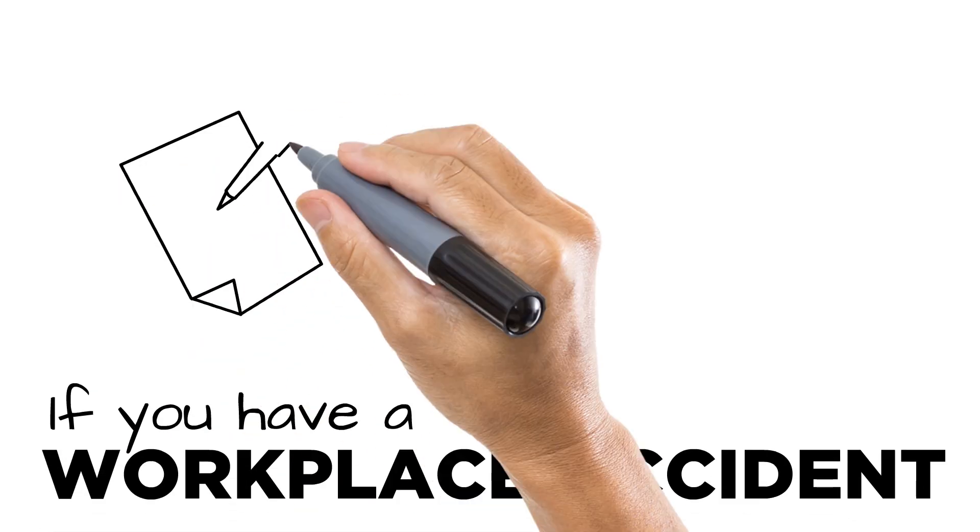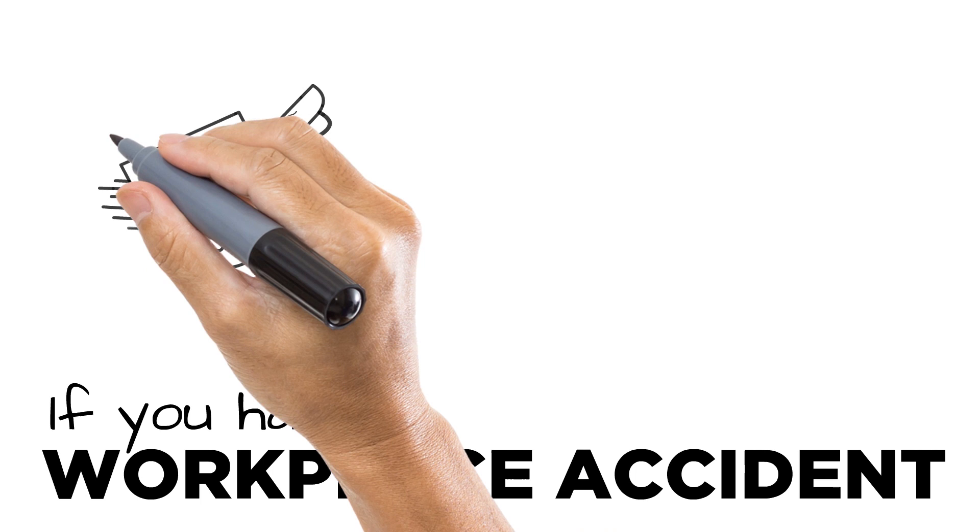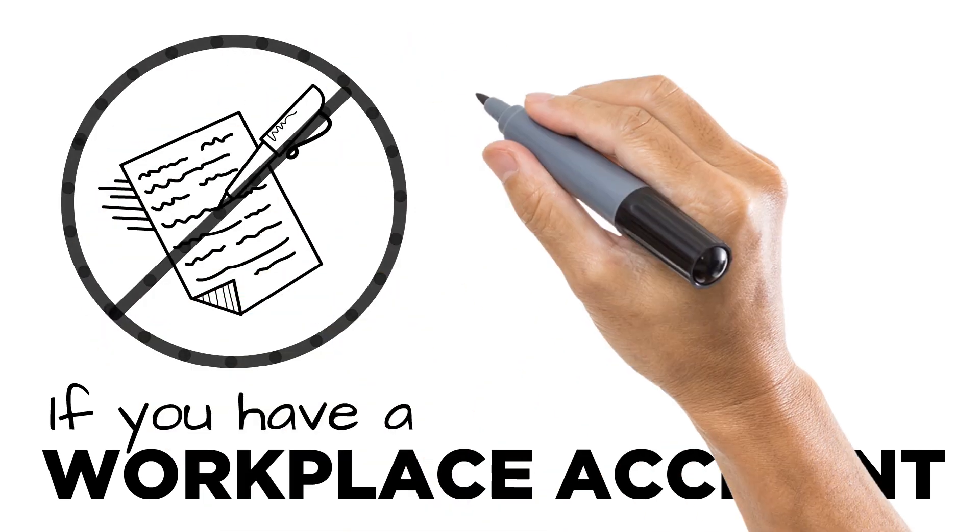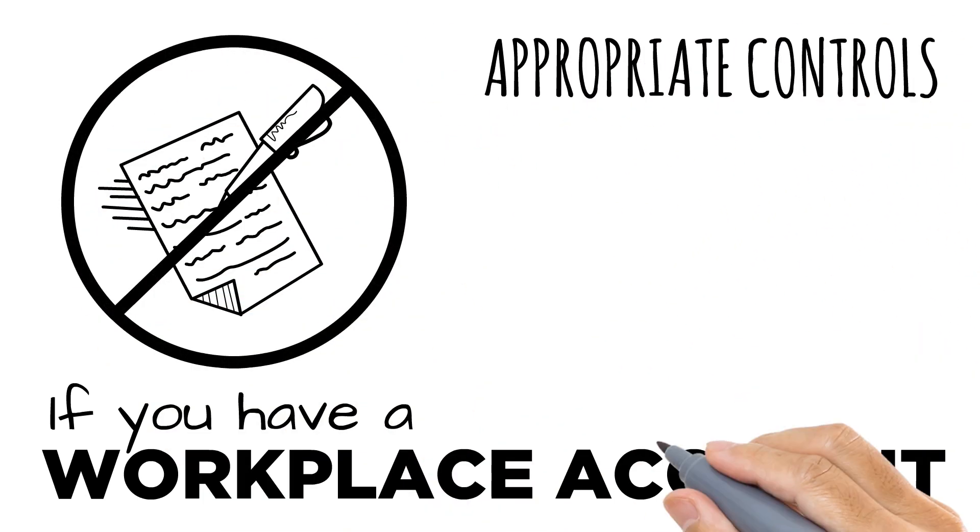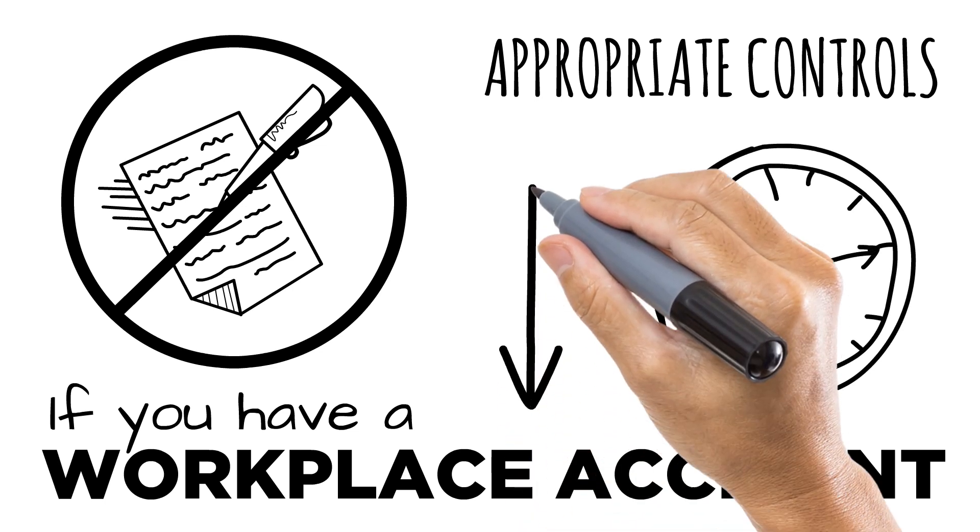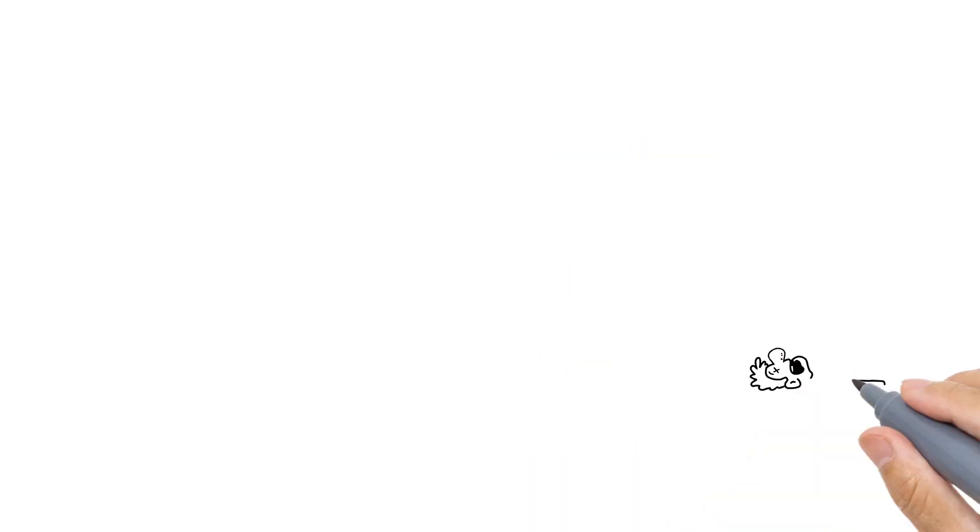In the same sense, if you have a workplace accident, WorkSafe will not be looking at what your procedures say or who signed off on what forms. They'll be looking at whether the appropriate controls were in place at the time of the accident.